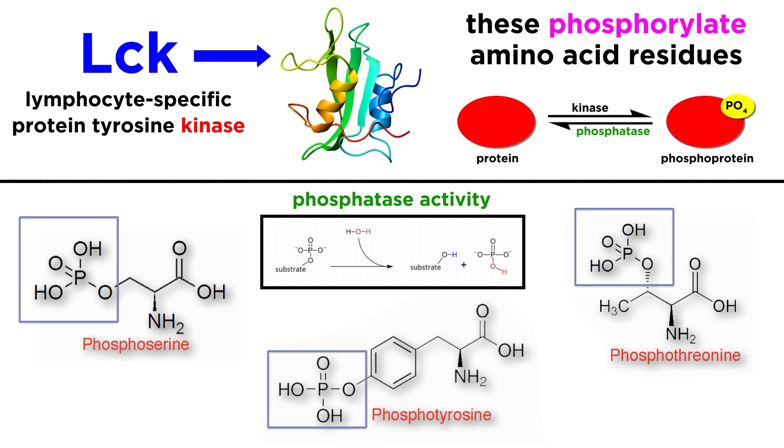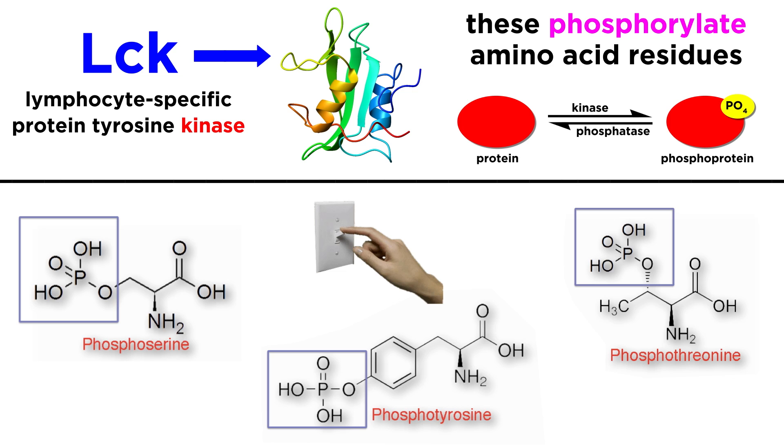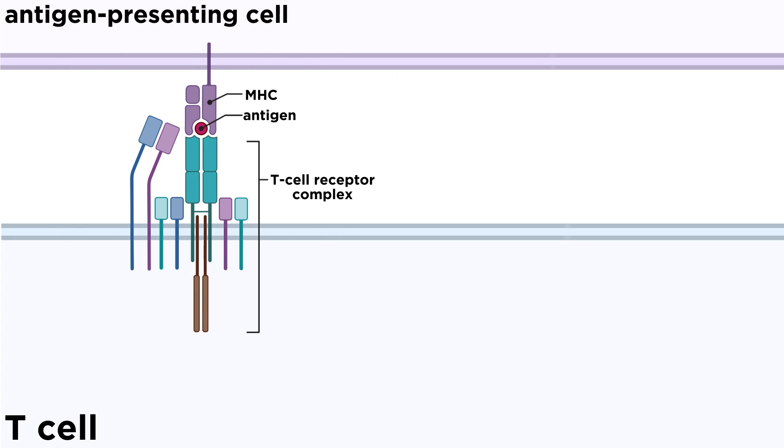Since the addition of a phosphate group can be reversed by enzymes called phosphatases, which remove phosphate groups, phosphorylation can act like a molecular light switch, turning certain protein functions on and off as necessary.